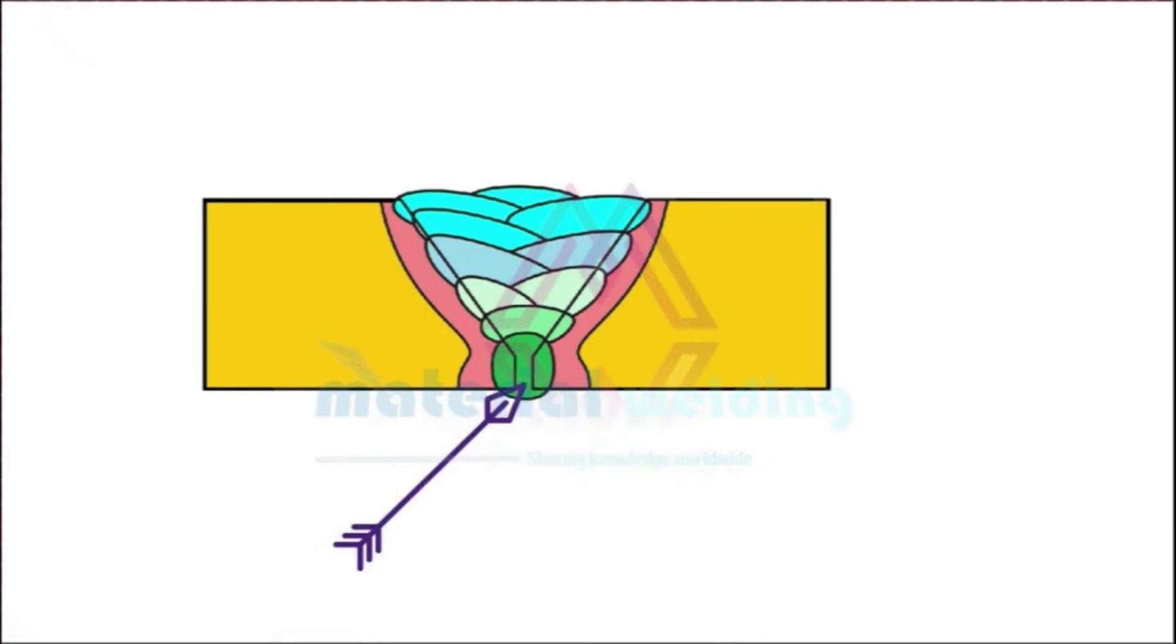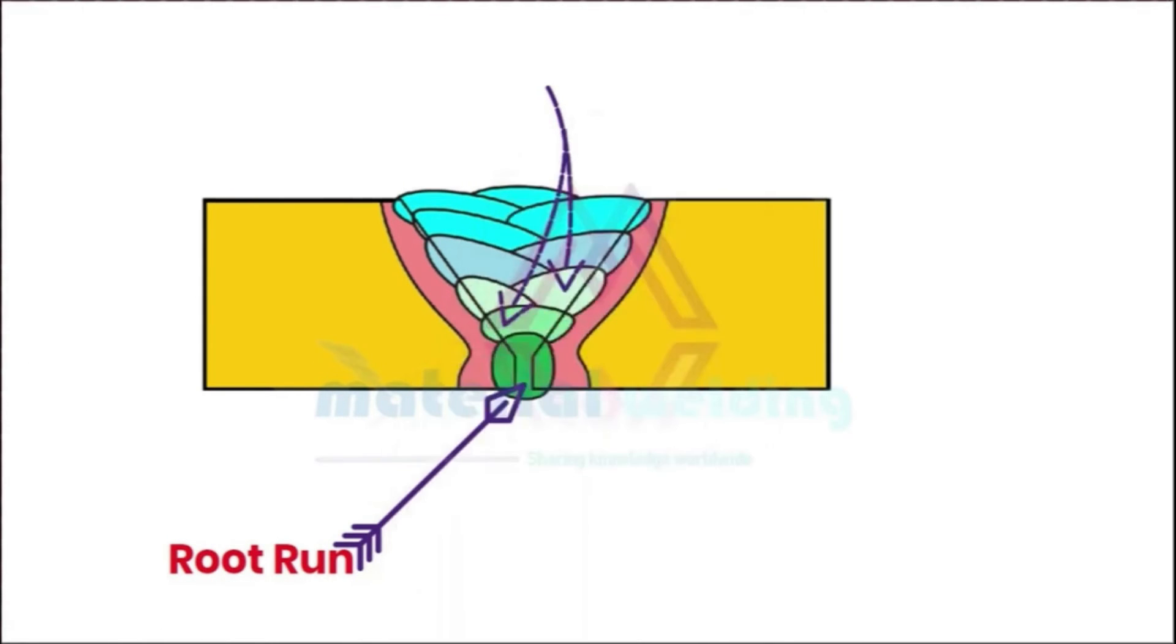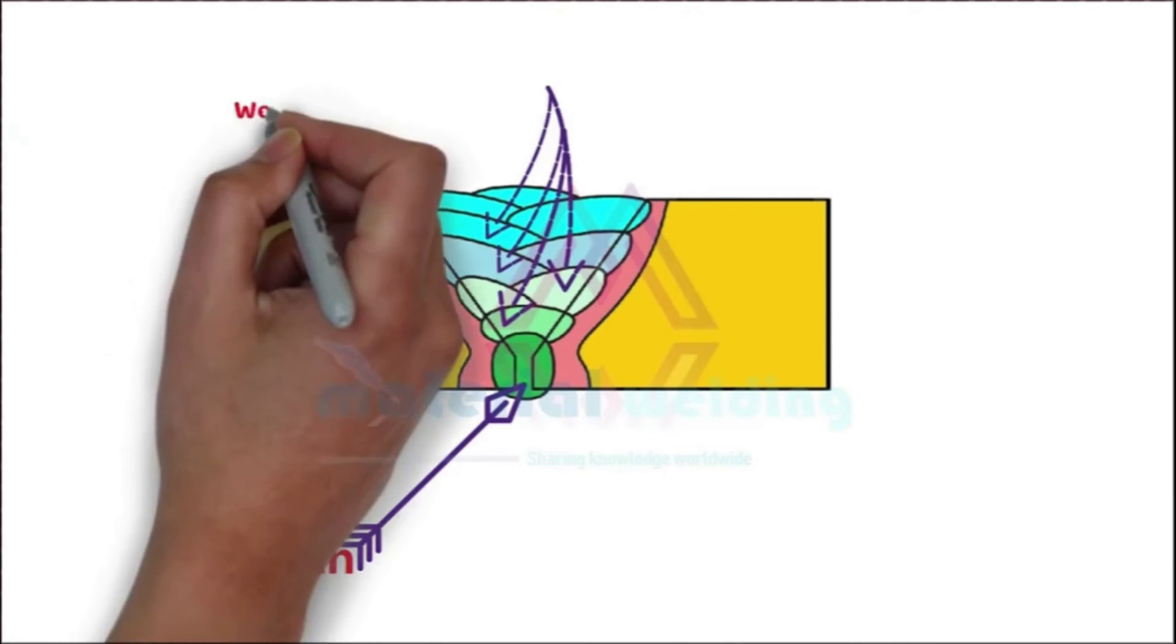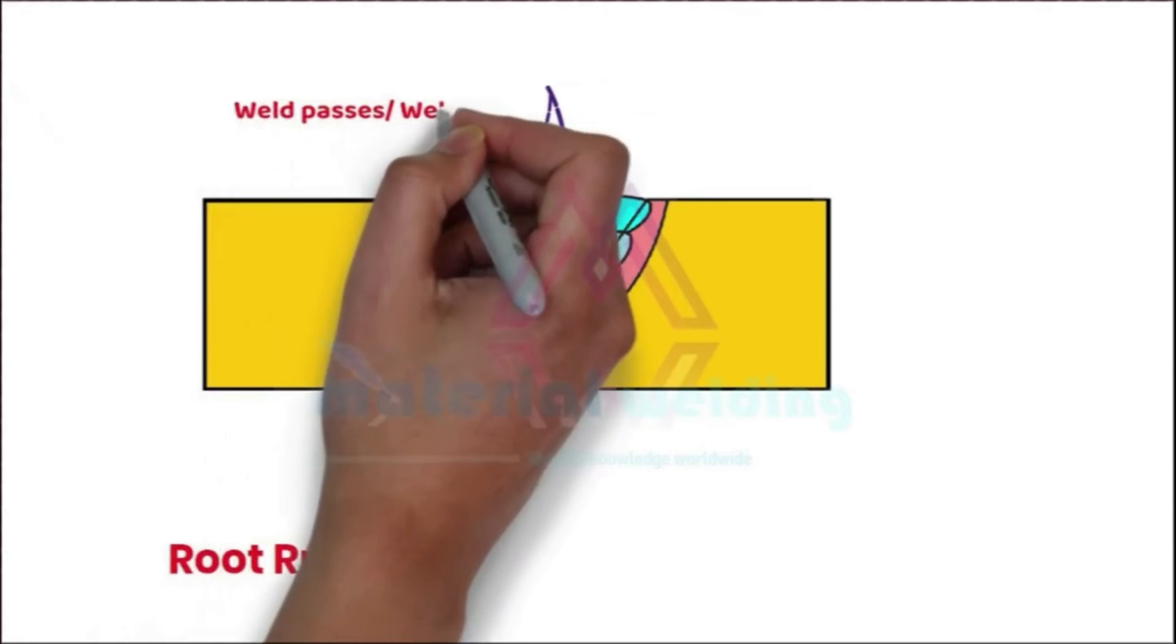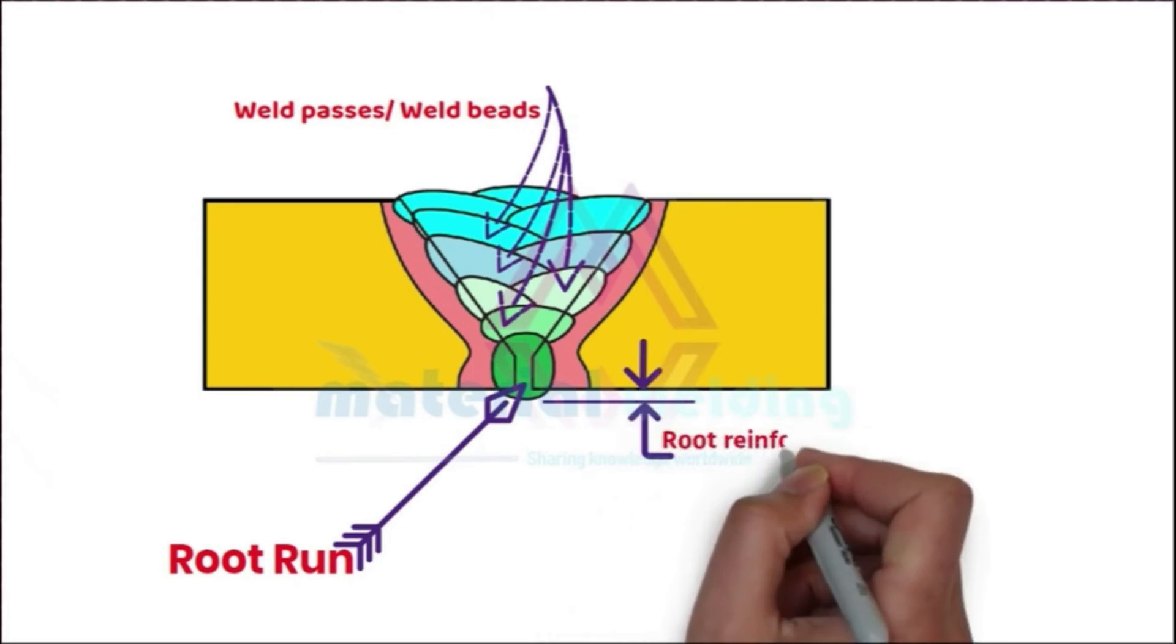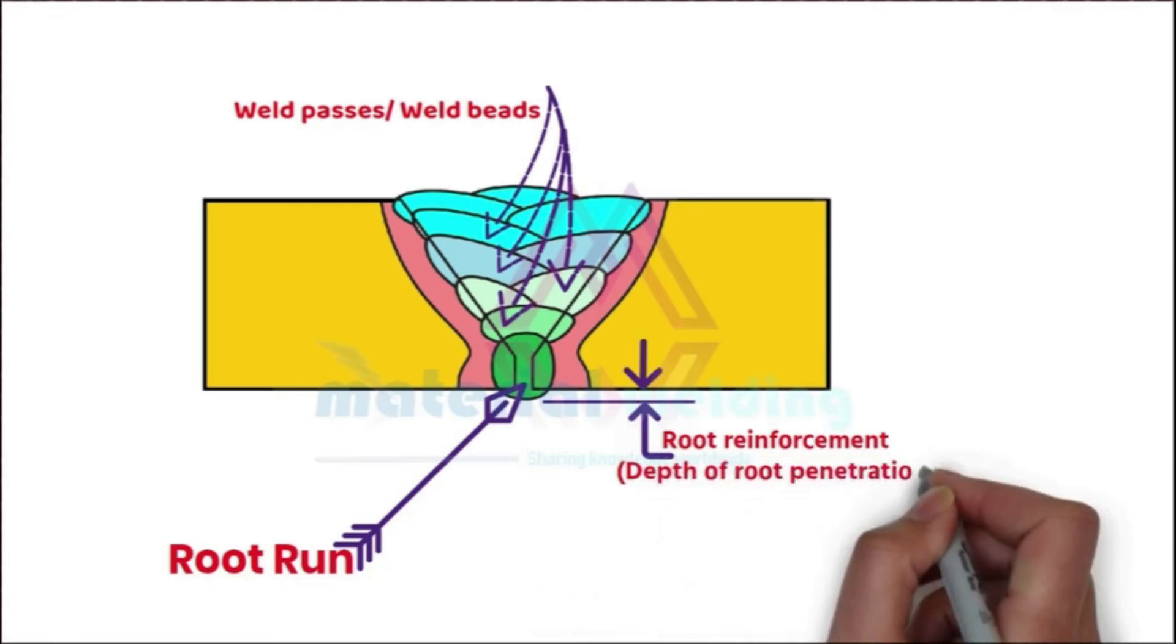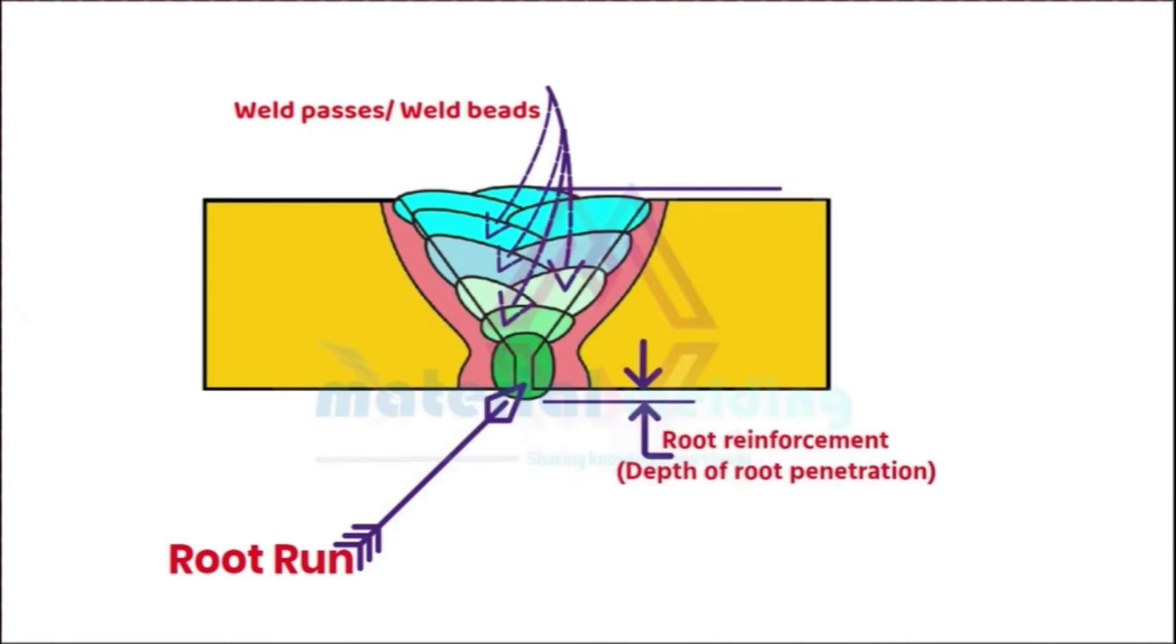Next, the first run deposited in a groove weld is called a root run. Each weld pass welded is called a weld bead or weld pass. Excess weld metal outside the joint on the root side is root penetration, and on the face side is called face reinforcement.